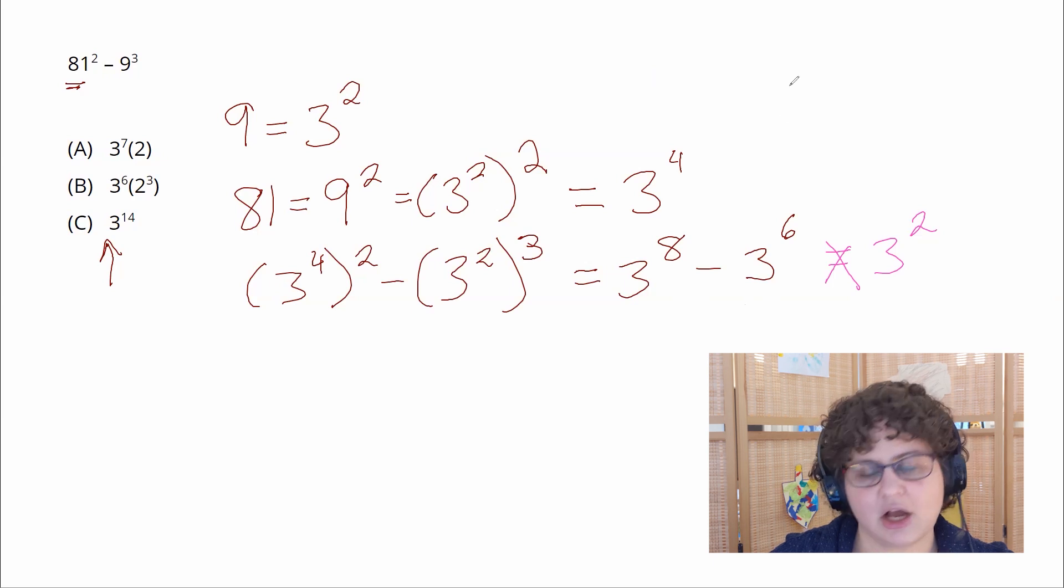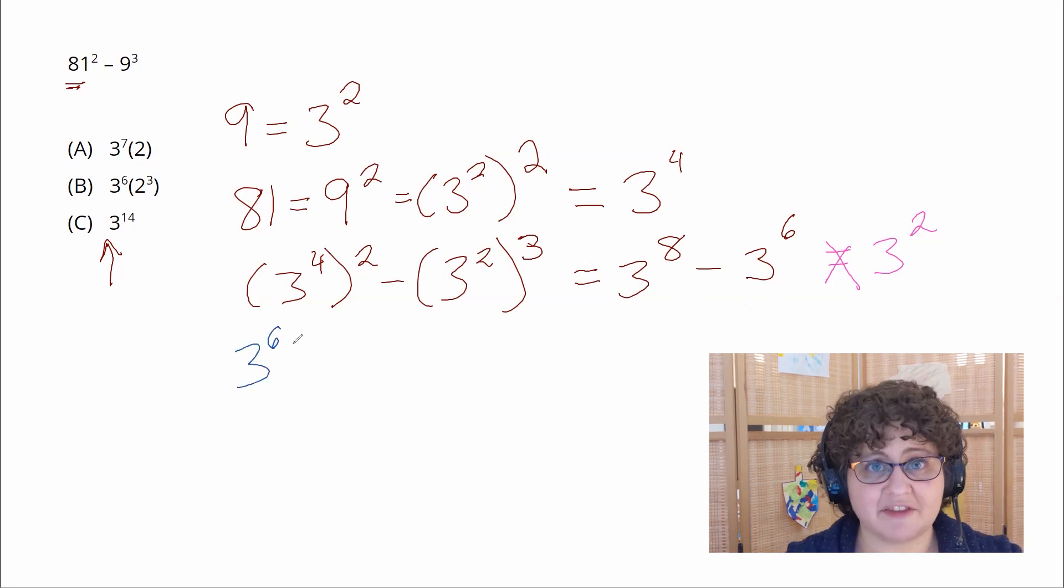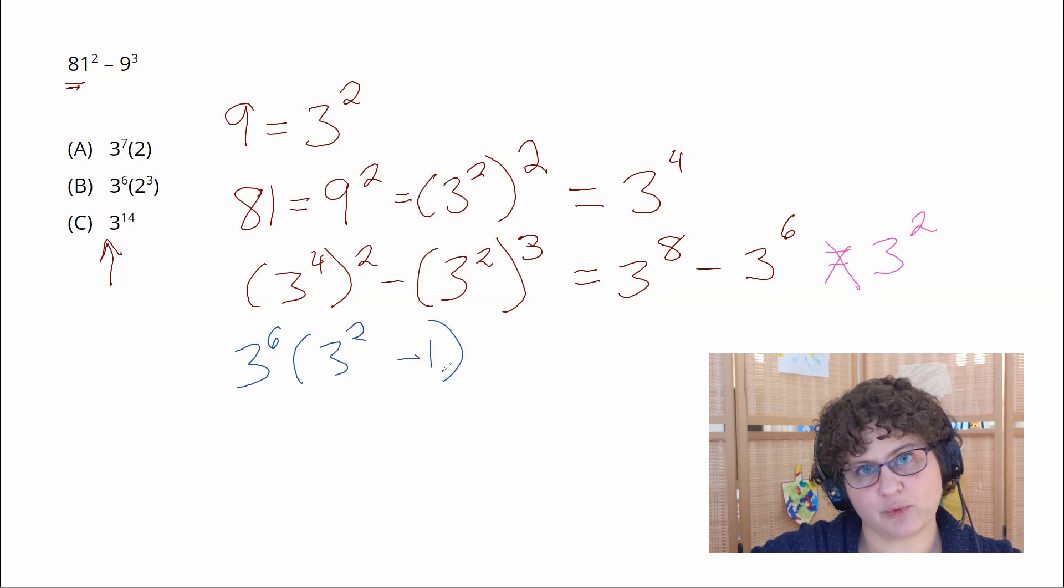So in this case the common term I want to factor out is 3 to the sixth. When I factor out a 3 to the sixth I can rewrite this expression as 3 to the sixth times 3 squared minus 1.